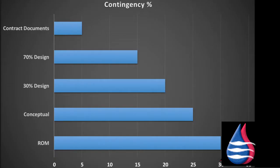There are different names and categories of contingency such as design contingency, construction contingency, and owner's contingency. No matter what you call it, it will cover some anticipated or unanticipated costs. The design contingency can include coverage for errors and omissions in the design documents, as well as changes and upgrades in the design.